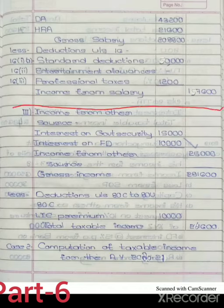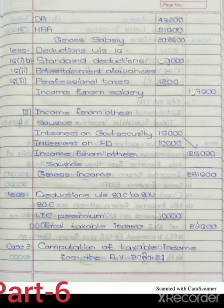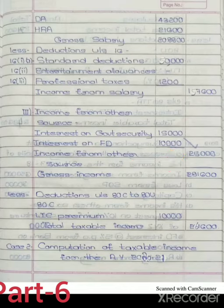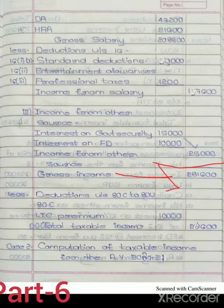After the salary head, the next head is income from other sources. Interest on government security: 15,000. Interest on FD: 10,000. Total income from other sources: 25,000. After adding income from salary, income from business, and income from other sources, the gross total income is 2,81,600.